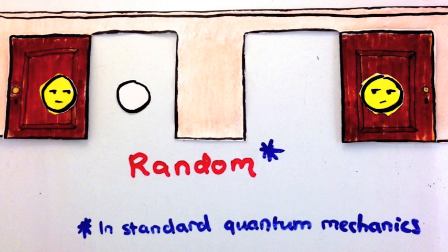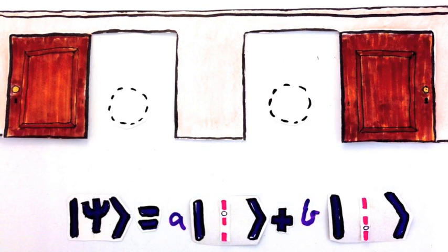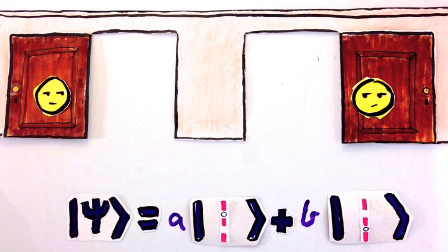It's not that the particle really was doing one thing all along. If you hadn't measured it, it would still be in a superposition. But when you do look, it has to choose only one option.